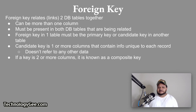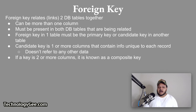A foreign key relates or links two database tables together. A foreign key can be more than one column, and it must be present in both database tables you are trying to relate. The foreign key in one table must be the primary or candidate key in another table. A candidate key is one or more columns that contains information unique to each record and doesn't refer to any other data. If a key is two or more columns, it is known as a composite key.